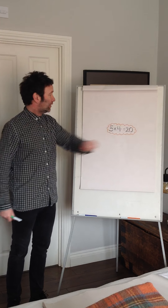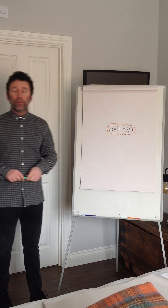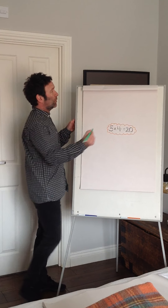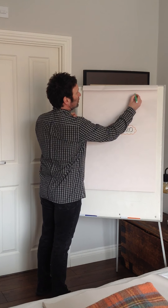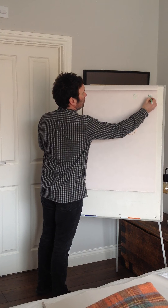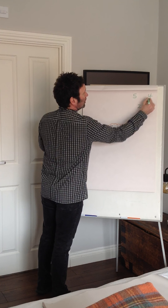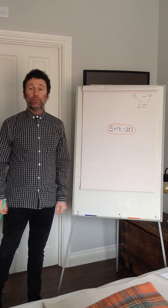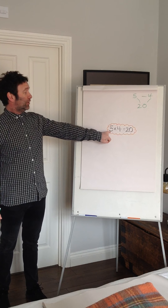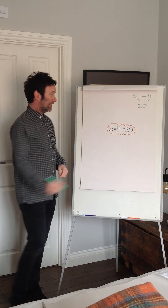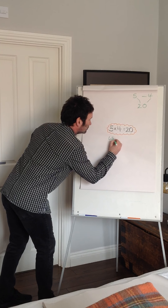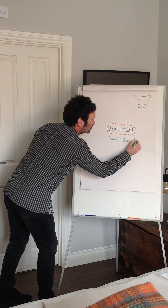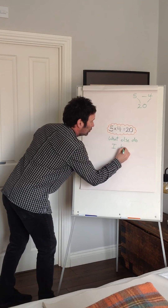So for example, 5 times 4 equals 20. We take this simple times table and what we want to do is draw the children's attention to the three numbers that are involved here and how they are linked. Basically the question we want to ask is: if I know that 5 times 4 is 20, what else do I know?